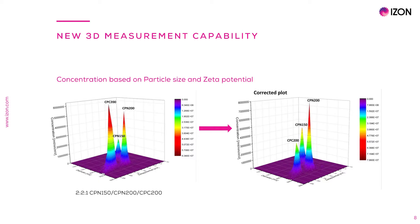However, one of the most recent innovations on our TRPS and EXOID technology is the possibility of analyzing data of EV concentration based on size and zeta potential simultaneously, as shown in this figure. TRPS measurements of zeta potential are done at very low pressures to keep electrophoresis as the main driving force.